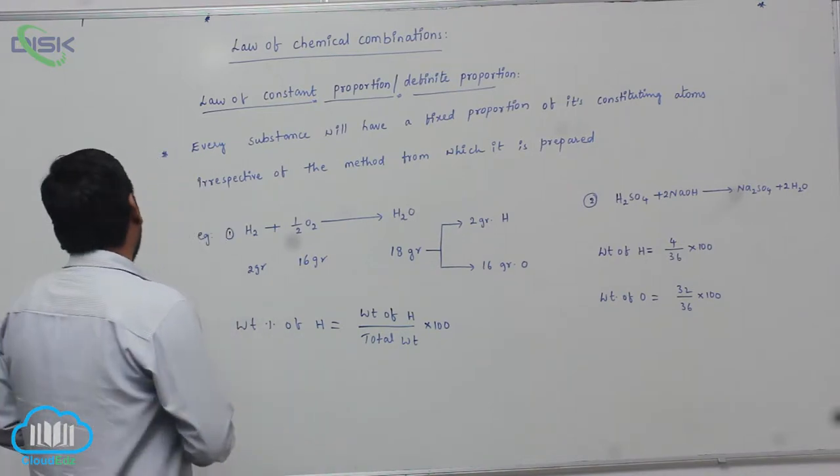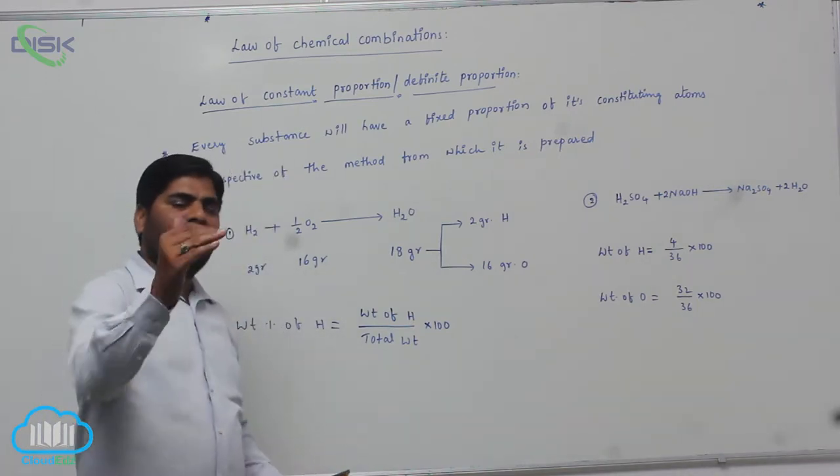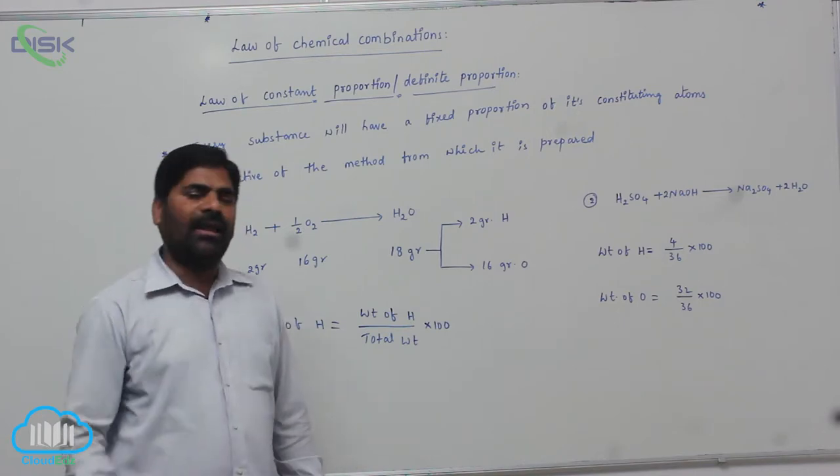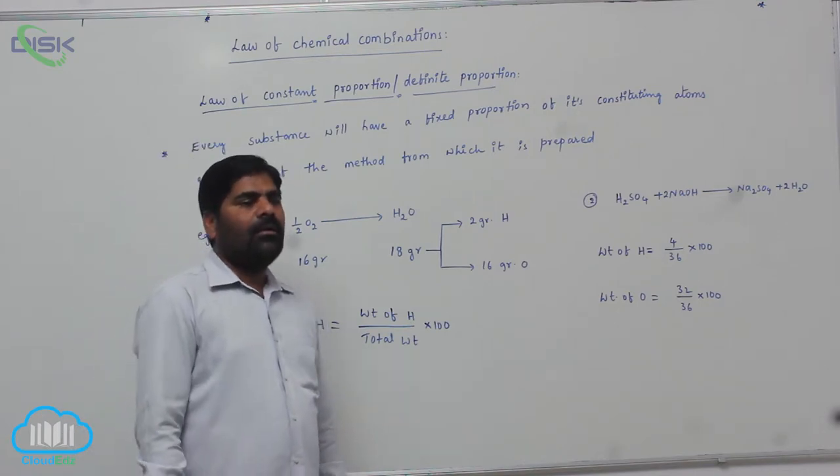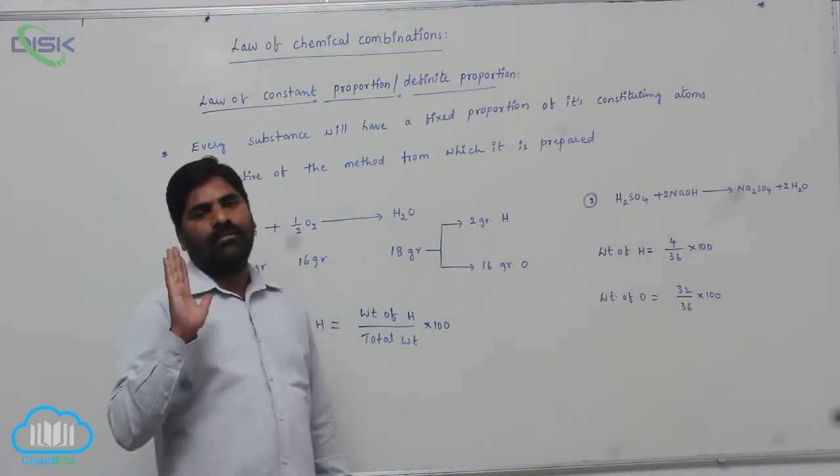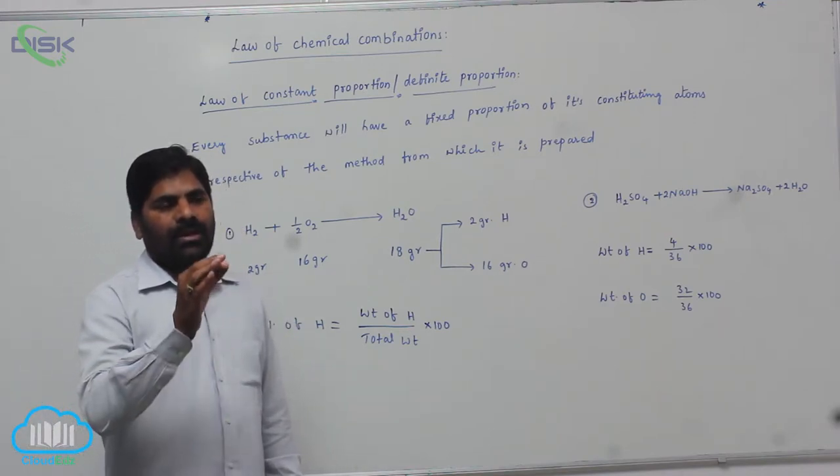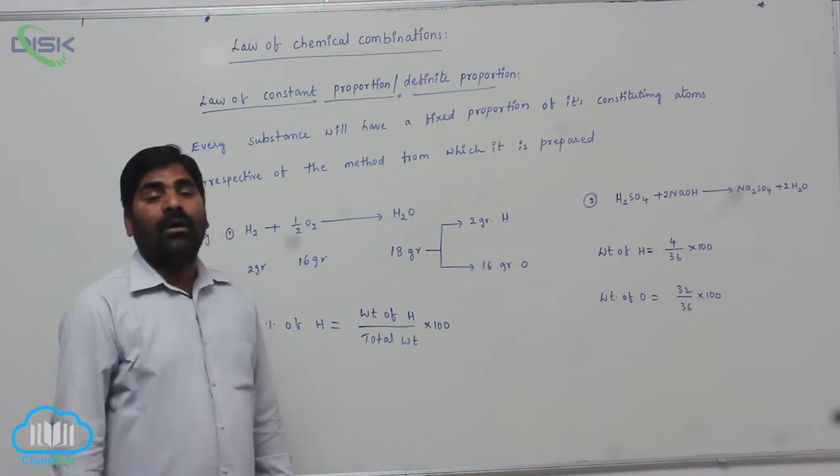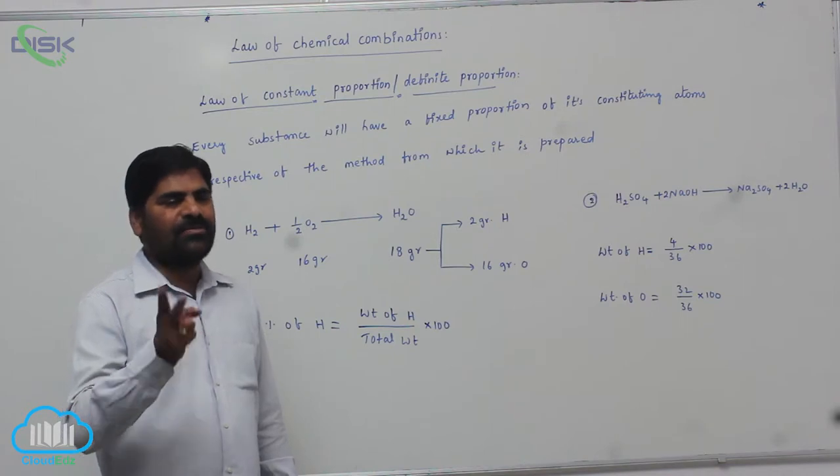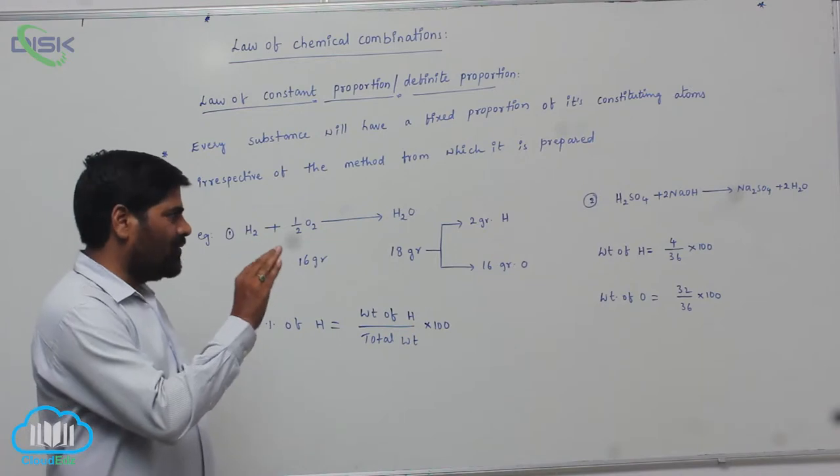For example, if water is formed by any one of the process, if water is obtained by any one of the method or chemical process, its fixed mass ratio is 2 is to 1, means 2 grams of hydrogen and 16 grams of oxygen is always combined.